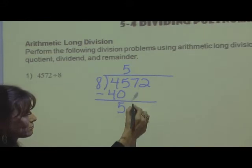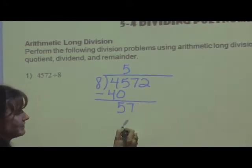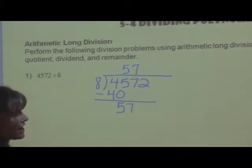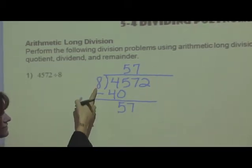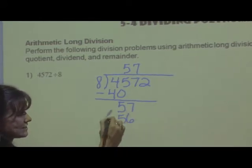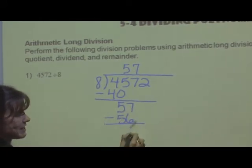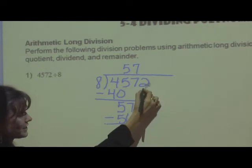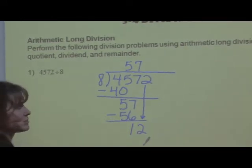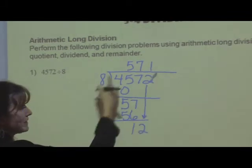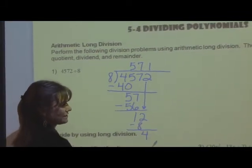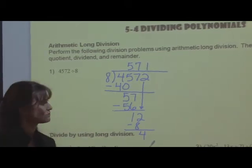And you'd be left with 5. Bring down the 7. 8 goes into 57 seven times. 7 times 8 is 56. 56 subtracted from 57 is 1. Bring down the number 2. 8 goes into 12 one time. 1 times 8 is 8. And we have 12 minus 8, which is 4.